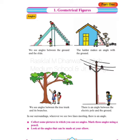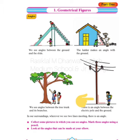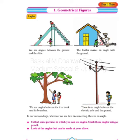In the fourth picture, there is an angle between the electric pole and the ground. Can you see it next to the boy? It is marked in an L shape. So it is a right angle. So these are some of the angles we'll be learning about.